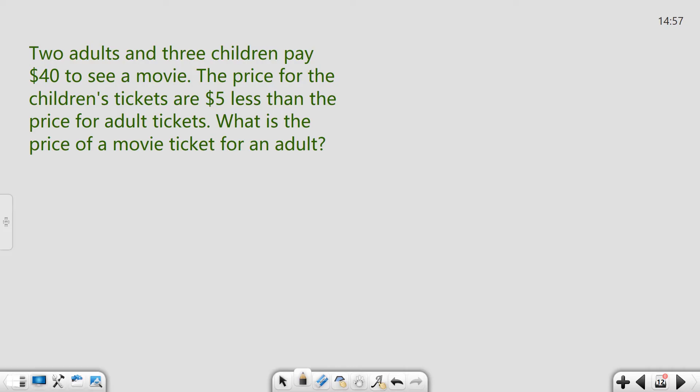So let's see, two adults which I'm going to call 2A. A for adults, you can use whatever letter you want, and three children, plus three children pay $40 to see a movie. The price for a children's ticket are $5 less than the price for an adult ticket. So I'm going to say C equals $5 less than an adult, which means that's an adult price minus $5.